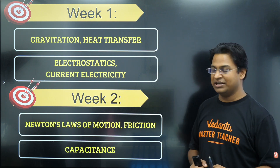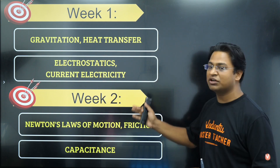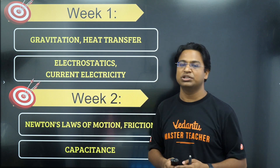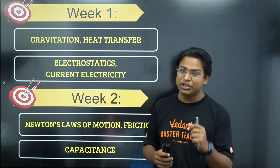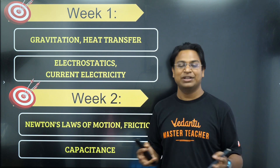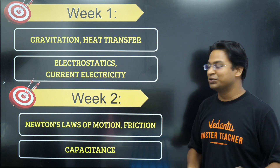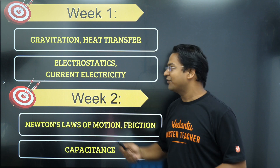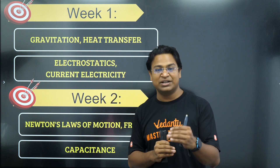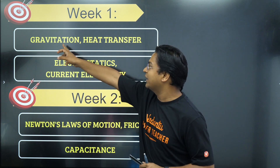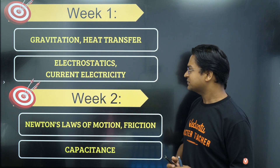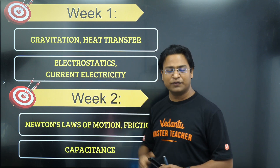So what you should be doing in the next 60 days — I've made a schedule and I'll give you the logic behind it. If you agree with the logic you can stick to it; if not, you can tweak it or make your own. In the first week, I've kept Gravitation and Heat Transfer, trying to balance 11th grade and 12th grade. We begin with Gravitation, Heat Transfer, Electrostatics, and Current Electricity.